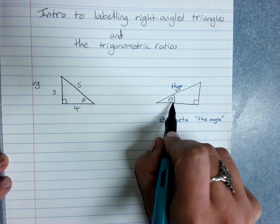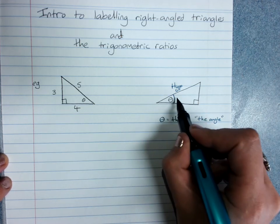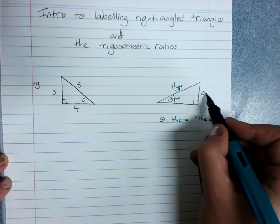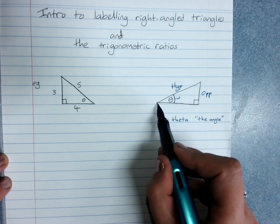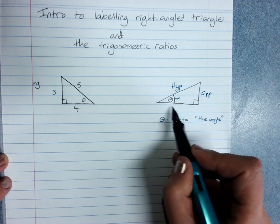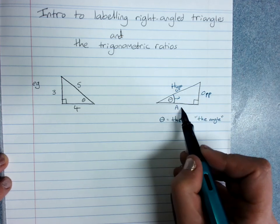Opposite the angle that is marked, or the angle that we care about, so opposite it, not touching it, is the opposite side. And next to the angle that we care about, but not the hypotenuse, is the adjacent side.